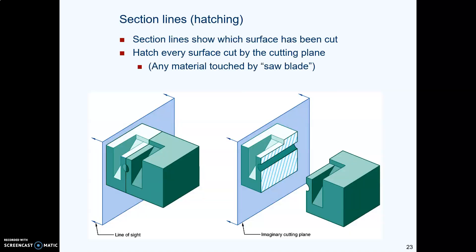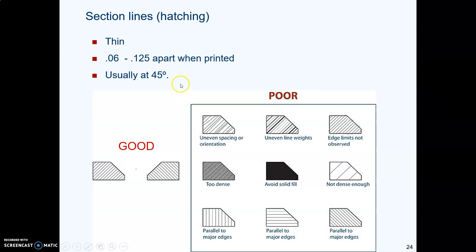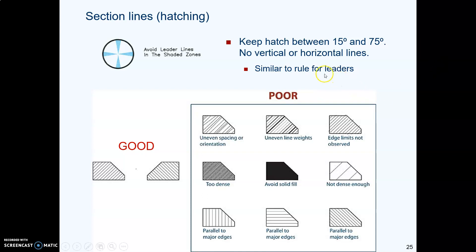Then we use hatching to show where the thing was cut. And again, thinking about our saw blade idea, the hatching shows where the material was touched by the imaginary saw blade. Notice here the stuff that actually got cut has hatching on it. The back of the hole that did not get touched by the saw blade does not have any hatching on it. ASME calls that section lines, not hatching. And basic idea is they're thin. They're usually at a 45 degree angle and they're somewhere between a sixteenth and an eighth of an inch apart. But whatever angle you have them at, you can't have vertical or horizontal hatch lines. They have to be between 15 and 75 degrees, just like we do for liters.